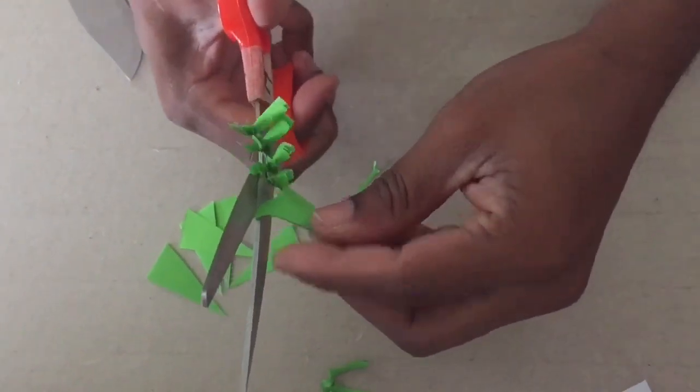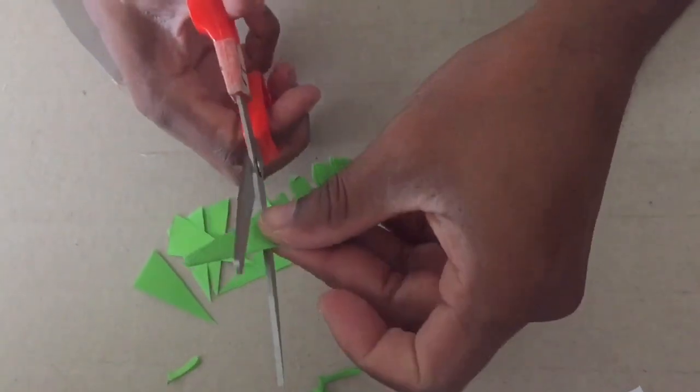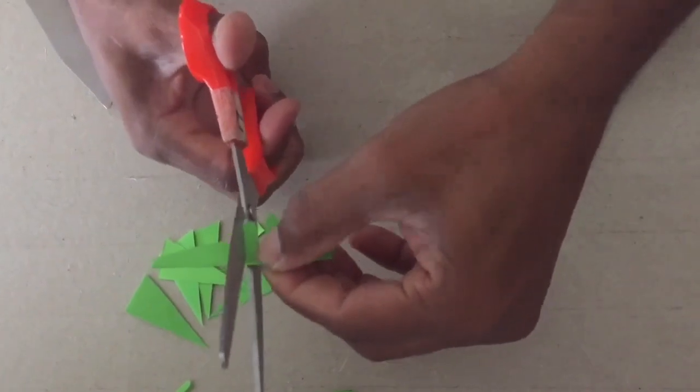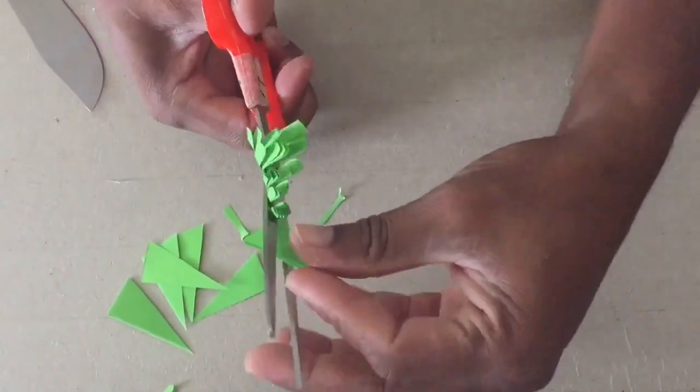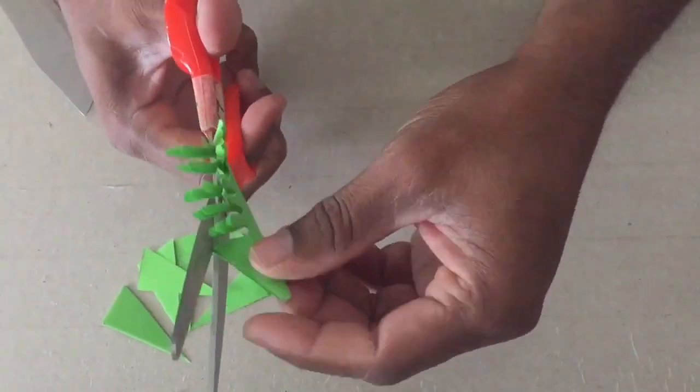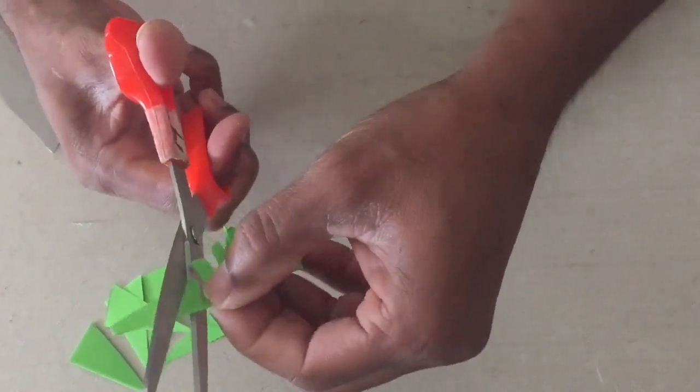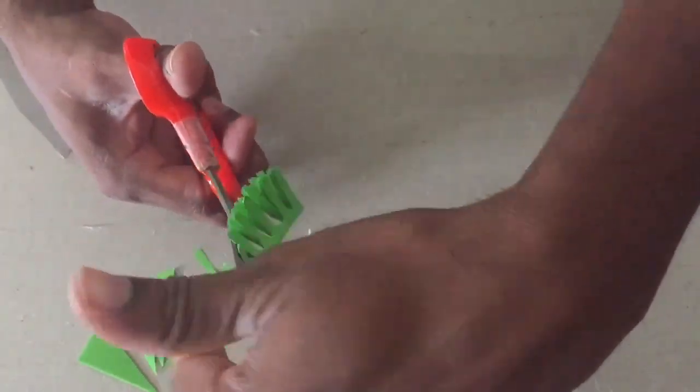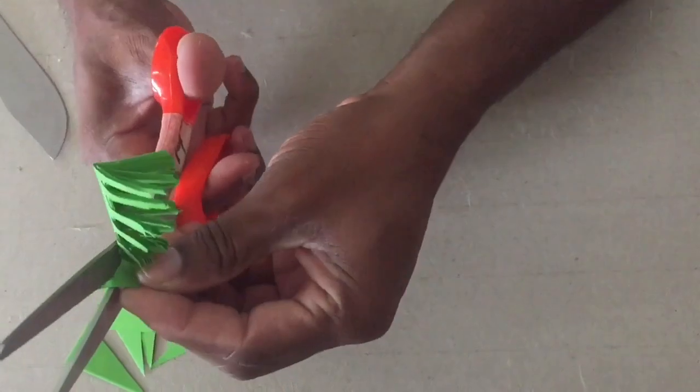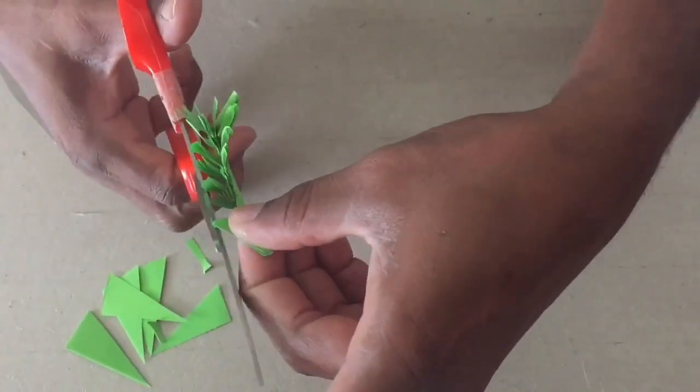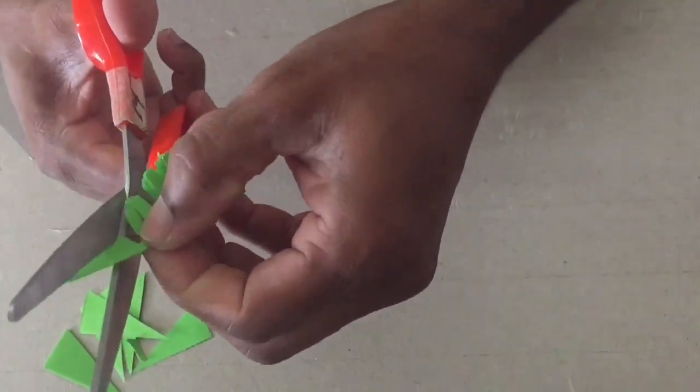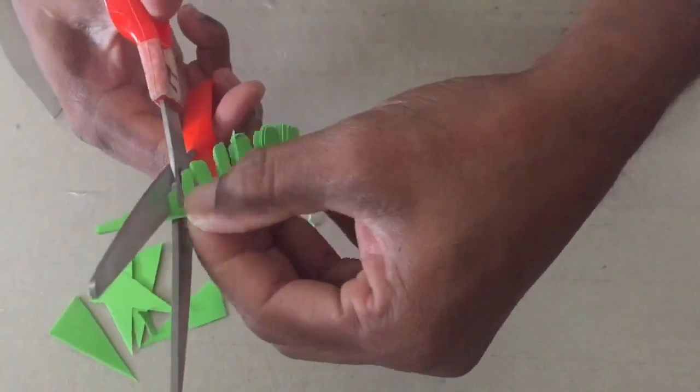See how I rotate my paper. Now it gets difficult as I move closer to the tip of the leaf.